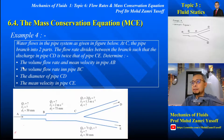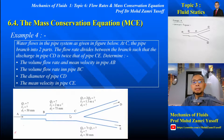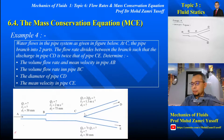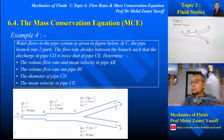We are asked to determine: the volume flow rate and mean velocity in pipe AB, the volume flow rate in pipe BC, the diameter of pipe CD, and the mean velocity in pipe CE. Water enters at point A, then there is a flow enlargement at point B. At point C, the water divides into two branches through pipe CD and pipe CE, where the discharge in CD is twice that of CE.